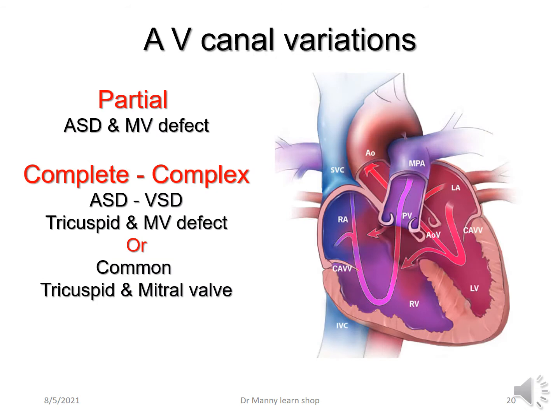AV canal variations: partial means an ASD with possibly a mitral valve defect. In a complete or complex case, there's an ASD and a VSD with tricuspid and mitral valve defects. Or there can be a common combined tricuspid and mitral valve, which makes it very complex for a cardiac surgeon to correct.